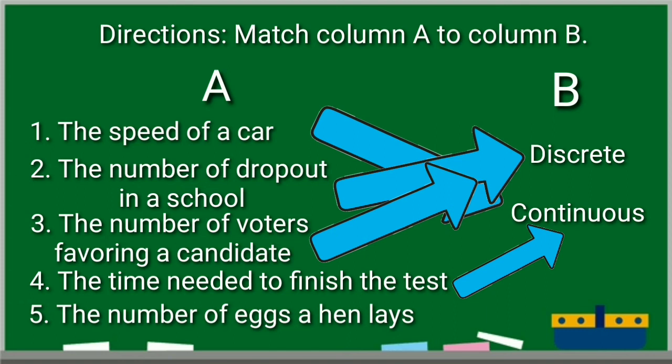Number five. The number of eggs a hen lays. This is countable. So, the answer is discrete.